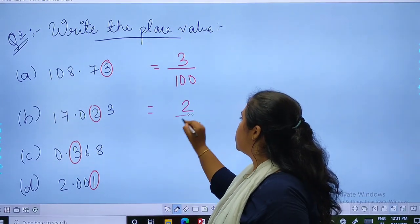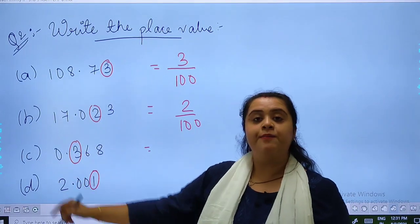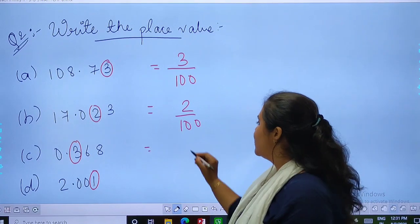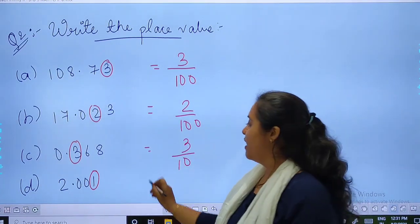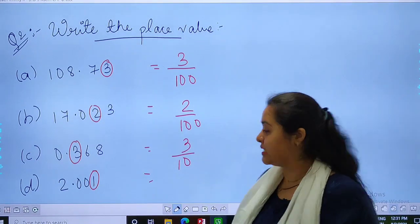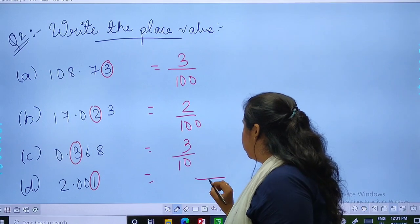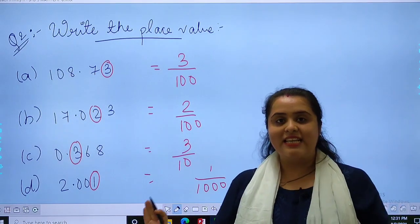In this case, 3 is standing at tenth place, so it will be 3 upon 10. Now as you can see, 1 is standing at thousandth place, so 1 upon 1000.